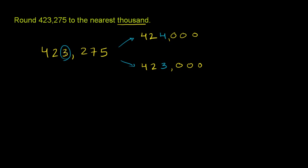we just look at the digit one place to the right of the 3. So we look at the 2 right there. If that digit is 5 or greater, you round up. If it's less than 5, you round down. 2 is definitely less than 5, so we just round down. So it is 423,000.